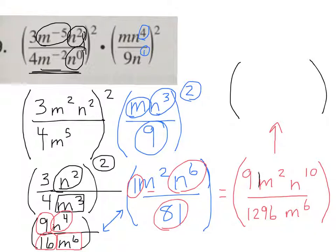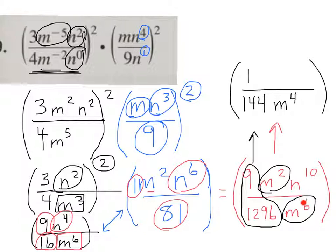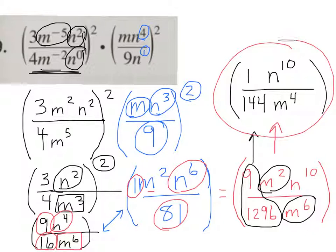Now our last step: first I need to see if 9 over 1,296 will reduce. It reduces to 1 over 144. So on top I'm going to write 1, and on bottom 144. That was this simplified. Now, m squared divided by m to the 6th — 6 minus 2 is 4. Does m to the 4th go on top or on bottom? Bottom. The m to the 4th goes on bottom because the larger exponent is on the bottom. And there's nothing to divide n to the 10th by, so I'll write n to the 10th on top. There's your final answer — and you don't need those outside parentheses.